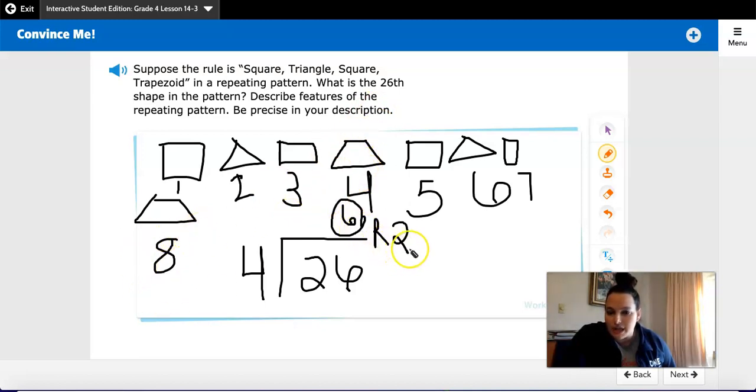Then I have 2 left over. That means I need to count 2 more in this pattern. So if I ended with a trapezoid, I'm going to count 2 more. 1, 2. So that would be a square and then a triangle. So the 26th place is going to be a triangle.